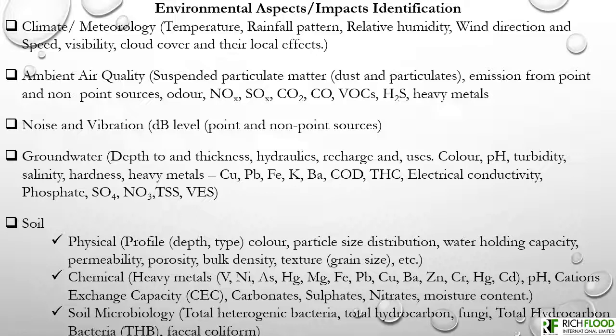Soil properties are divided into three components: physical, chemical, and soil microbiology. For the physical component, indicators include profile depth and type, color, particle size distribution, water holding capacity, and porosity. For the chemical component, indicators include heavy metals such as iron, mercury, copper, zinc, carbine, pH, cation exchange capacity, nitrates, and moisture content. For soil microbiology, indicators include total heterotrophic bacteria, total hydrocarbon bacteria, and fecal coliform.